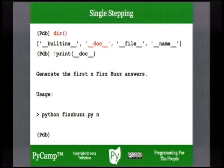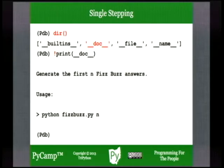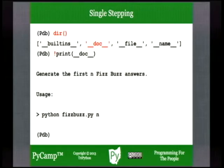Because the Python debugger has its own built-in 'print' command, we can use the exclamation point to disambiguate — we'd like to use the Python print function to look at the value of the __doc__ string of the module. You'll see how this module is documented at the module level: 'Generate the first N FizzBuzz answers.' There's a usage string showing you can invoke the Python interpreter with fizzbuzz as the script name and a command-line argument for how many answers you want.